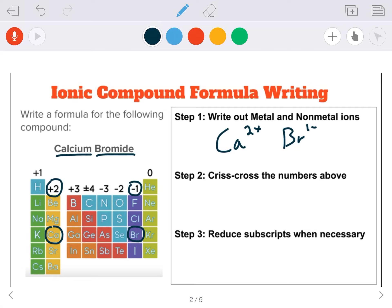So step two, use the crisscross method and cross the numbers. I'm going to circle the two in calcium. That's going to go to the subscript of bromine. Then I will circle the one, and that's going to go to the subscript of calcium. So when we write that out, that's going to be Ca1 Br2.